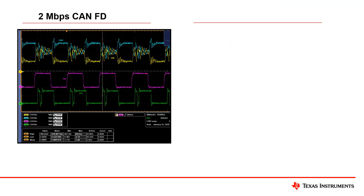As you can see, there is excessive ringing on both CAN-H and CAN-L when running at 2-megabit-per-second via CAN-FD. You may also see the signal glitch on the RxD signal. Both of these artifacts could cause signal reliability issues, especially on more complex networks than you see here.